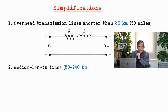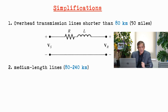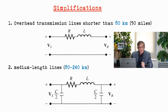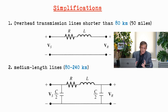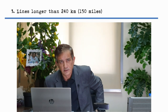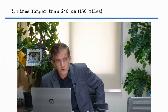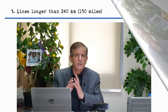For medium-length lines, the capacitance has an effect but can be easily represented as two capacitors — one at the sending end and one at the receiving end, each with a value of C/2. This simple model can represent the medium-length transmission line. The last category is long lines, more than 150 miles or 240 kilometers — we will leave those to the end.